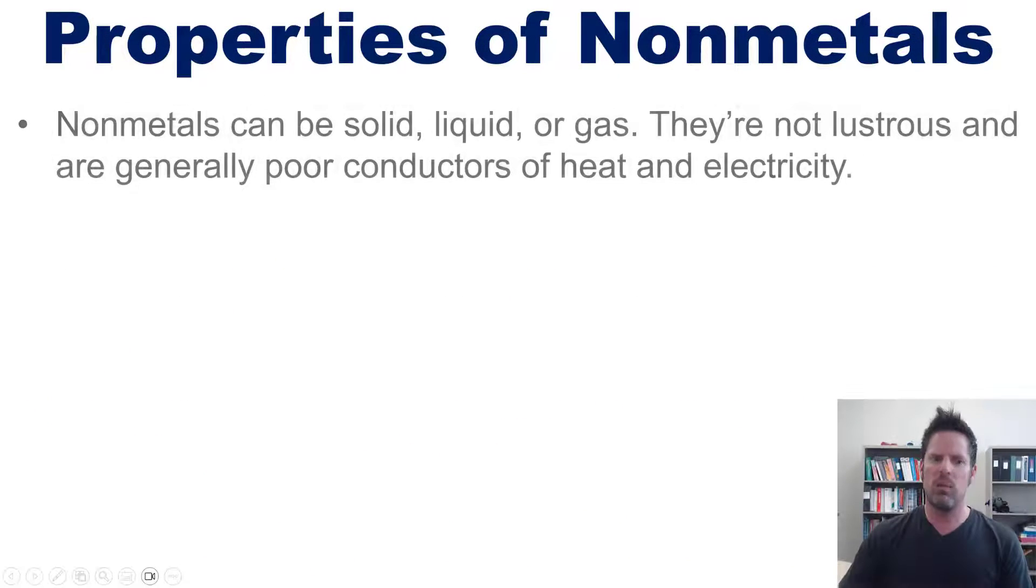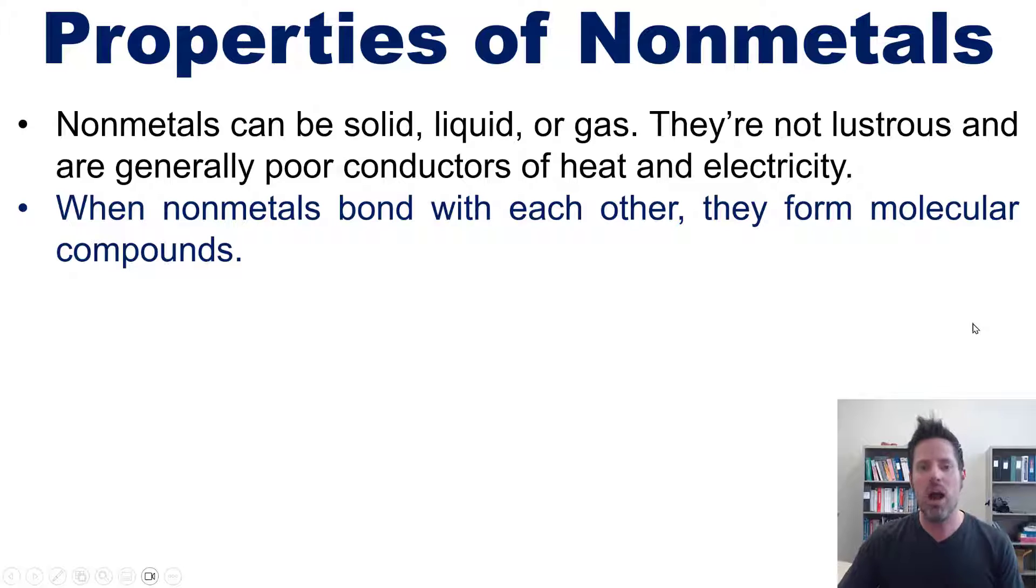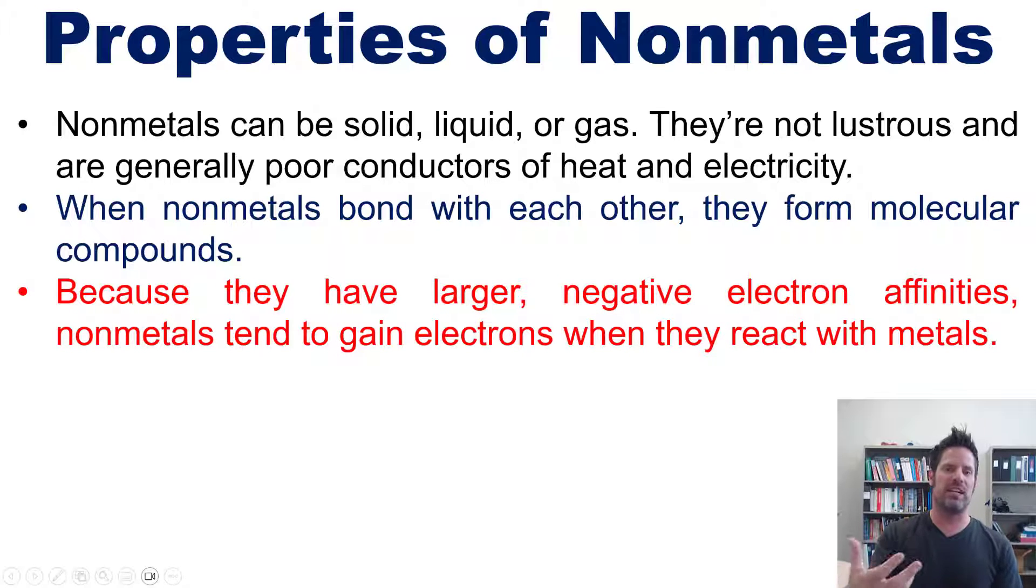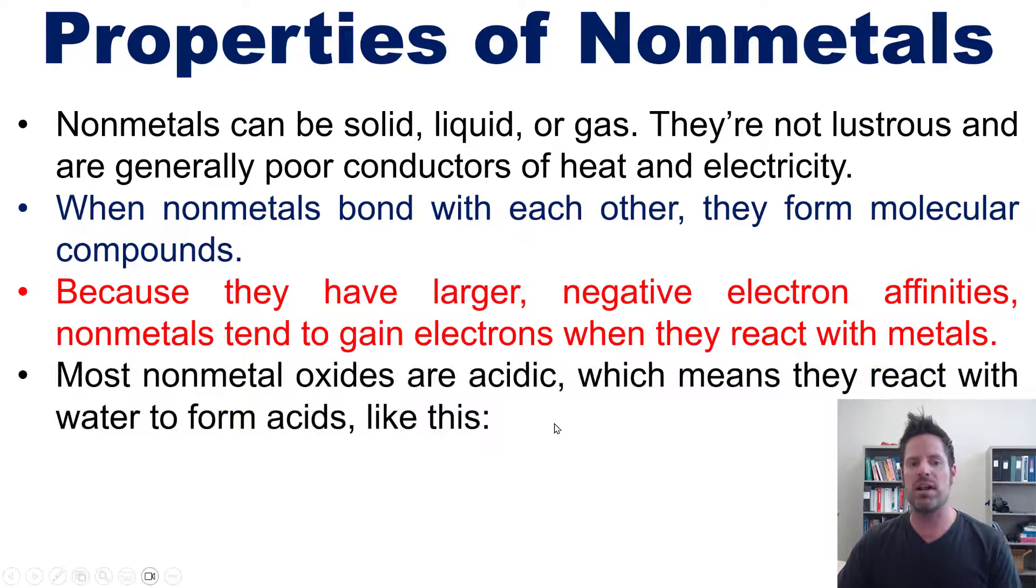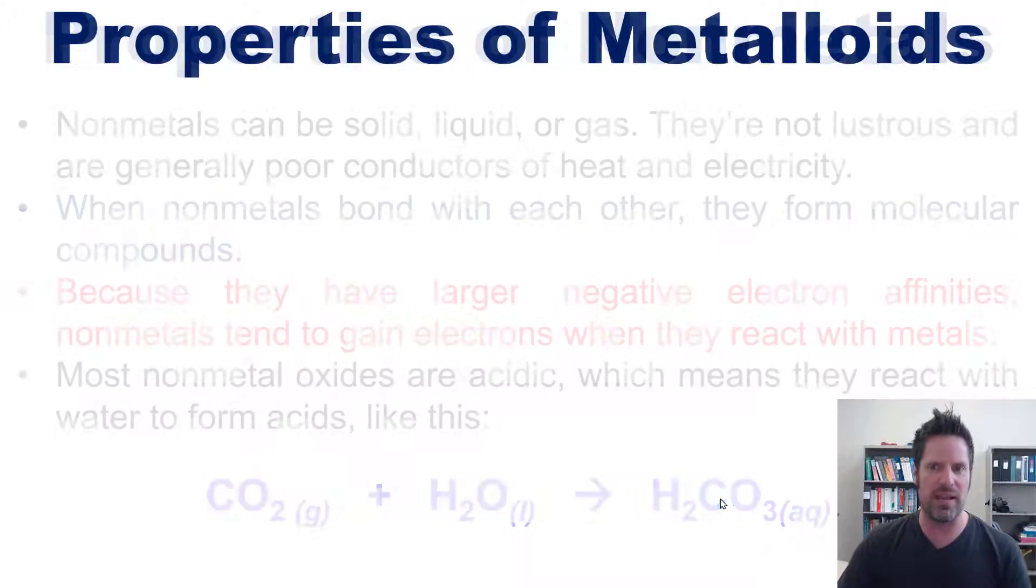Now what of nonmetals? Nonmetals can be solid, liquid, or gas. They're not lustrous or shiny and are generally poor conductors of heat and electricity. When nonmetals bond with each other, they form molecular compounds. Also, because they have larger negative electron affinities, that is they energetically favorably want electrons, nonmetals tend to gain electrons when they react with metals. And most nonmetal oxides are acidic, which means that they react with water to form acids, like this. And this acid right here is a weak acid called carbonic acid.